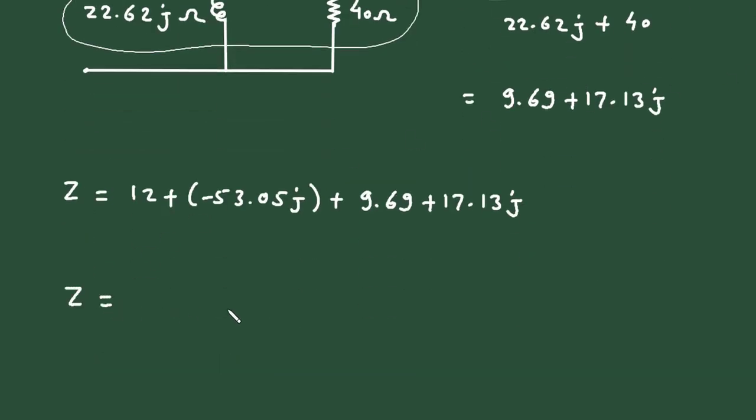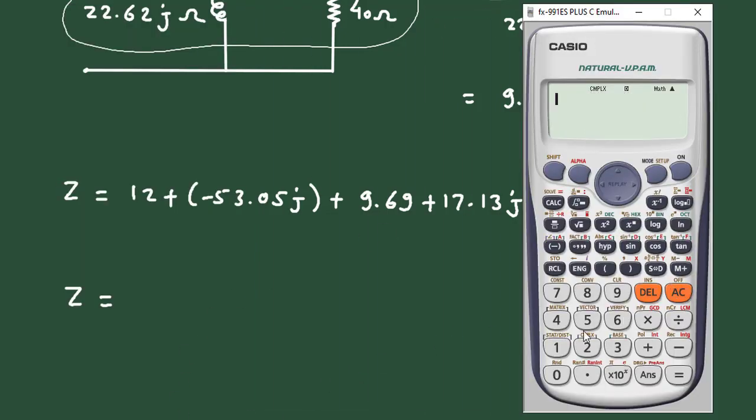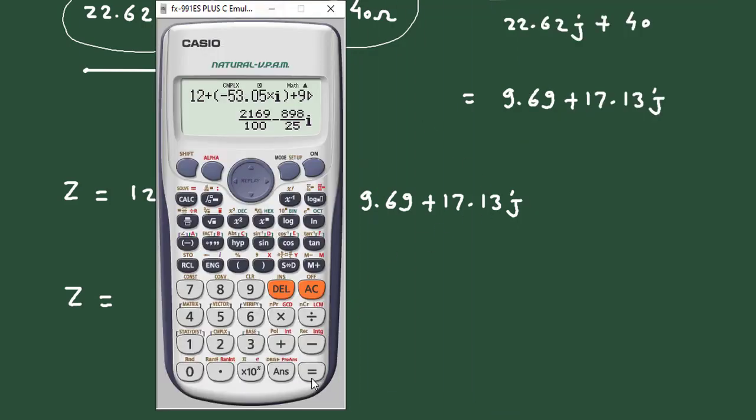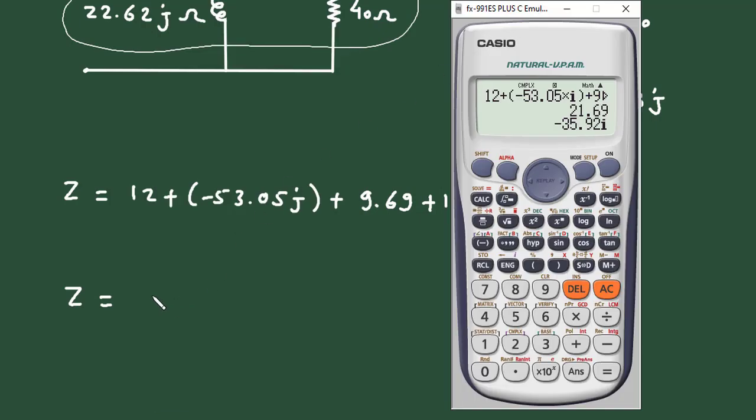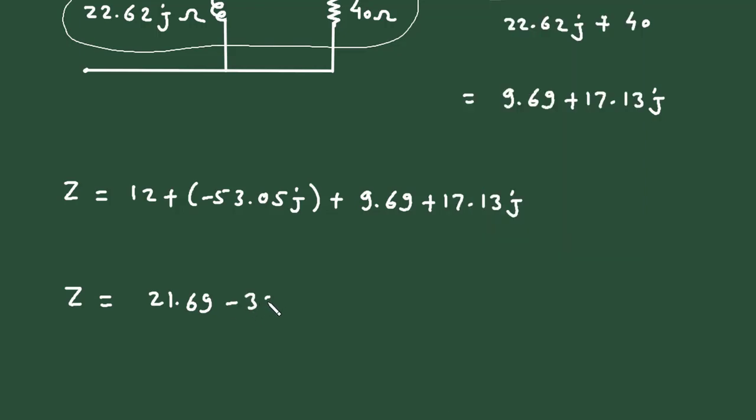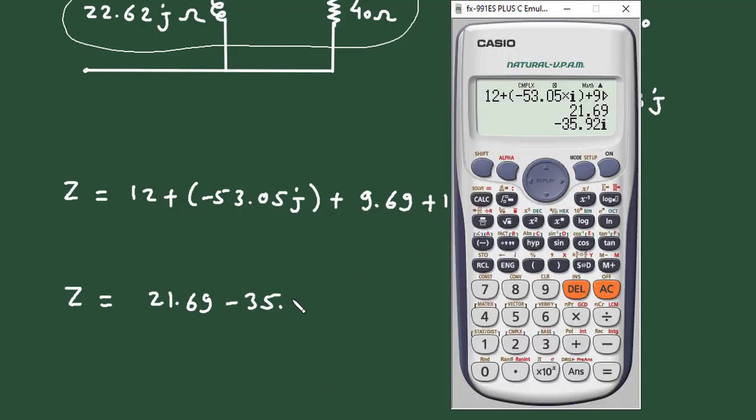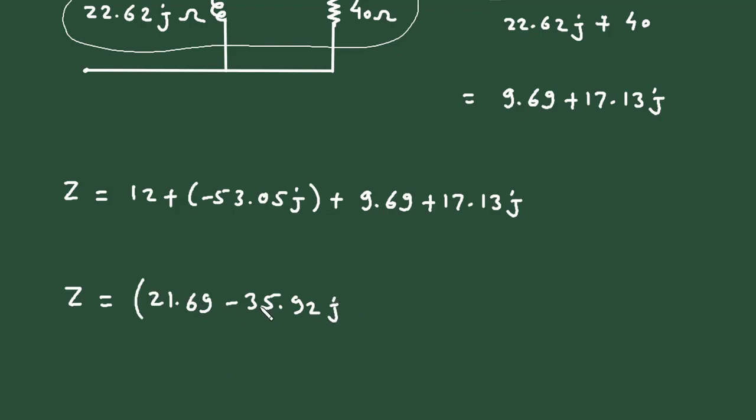So therefore, the total impedance will be, let's solve this in calculator. 12, then plus in bracket minus 53.05 into j bracket close plus 9.69 plus 17.13 into j. So this is equal to 21.69 minus 35.92 j. And since it is impedance, so its unit will be ohm.